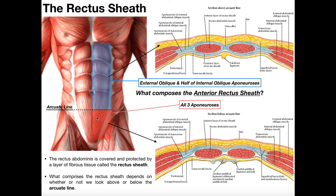Depending on where you are on the rectus abdominus, that rectus sheath can be in front of the rectus abdominus — in which case we would call it the anterior layer of the rectus sheath — or it can be behind the muscle, and that would be the posterior layer of the rectus sheath. So we're actually going to see some variation in where the rectus sheath lies, depending on where we are on the muscle.